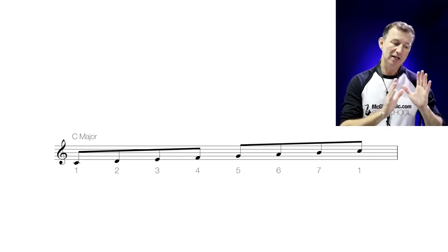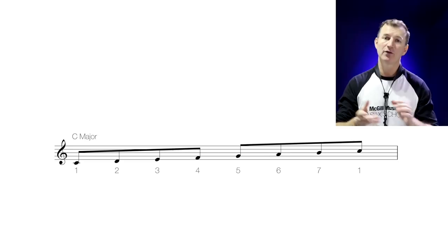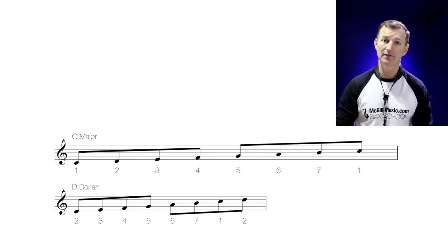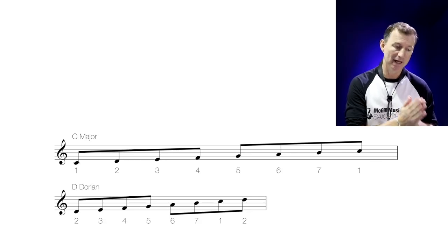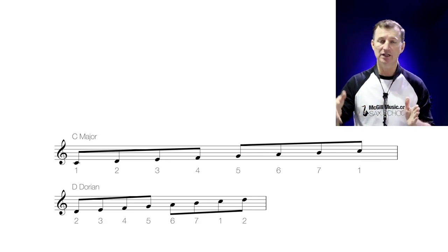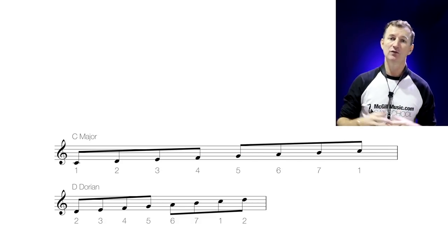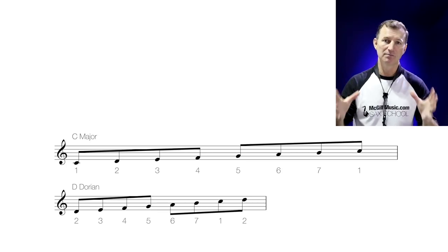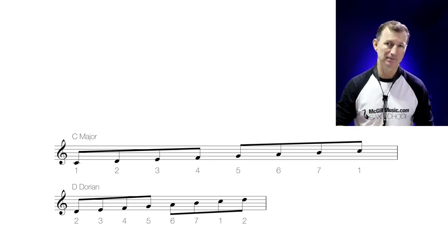But if you start on every other note and build a scale up, you get another jazz mode. For example, if you start on the second note of the C major scale — the D — and then you build a scale from that D up using the same notes from the scale, D E F G A B C and then D again, you've got what's called the Dorian mode. This is a mode that starts on the second degree of a major scale.